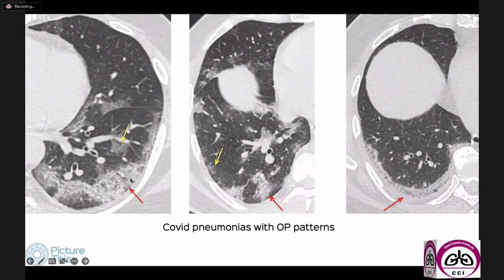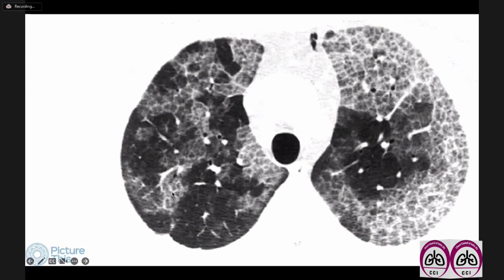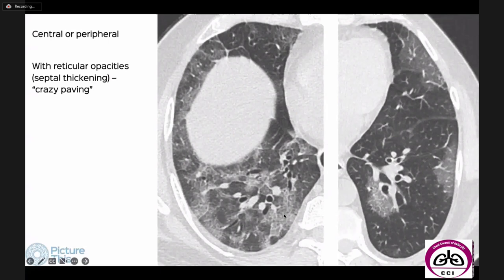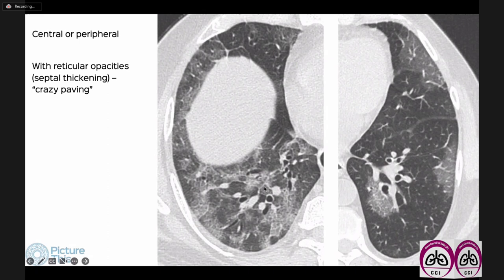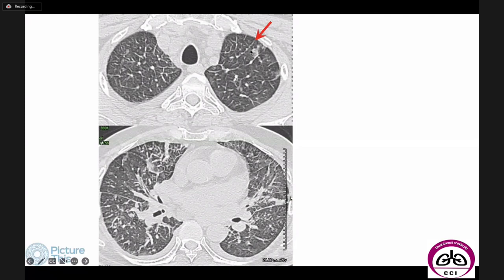We saw a lot of organizing pneumonia during COVID — consolidation with surrounding ground glass in various OP patterns. Then we have ground glass plus septal thickening, producing the crazy paving pattern — very typical of alveolar proteinosis, which can be secondary to underlying diseases or primary with different treatment. During the height of the first two COVID waves, we saw focal crazy paving patterns — ground glass with septal thickening — which was easy to diagnose in context, quite different from true alveolar proteinosis.